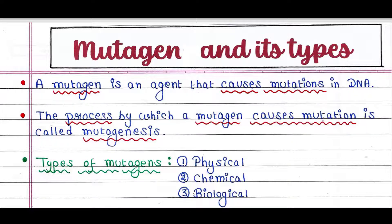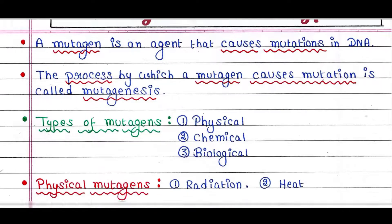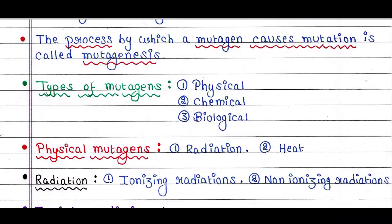There are different types of mutagens: physical mutagens, chemical mutagens, and biological mutagens.